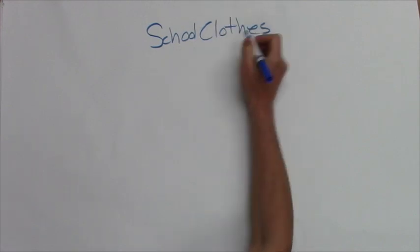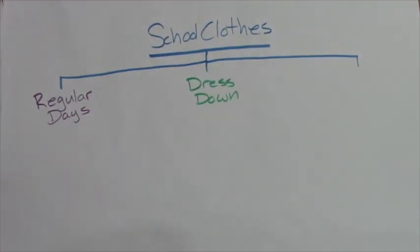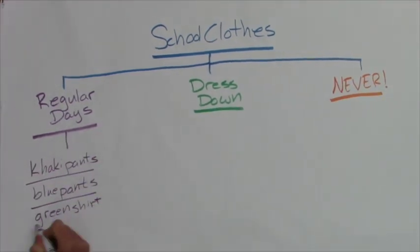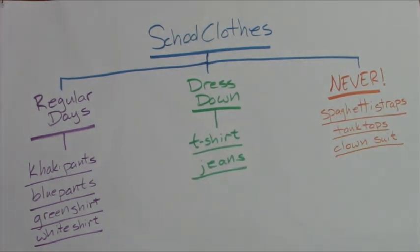Let's say you want to keep straight what you can wear to school. There are regular uniform days, dress-down days, and then the things you really should never wear to school. Making a tree map for each category will help you know exactly what to wear when.